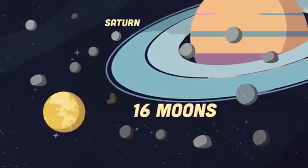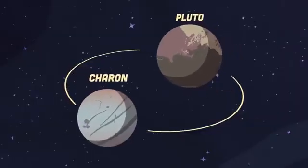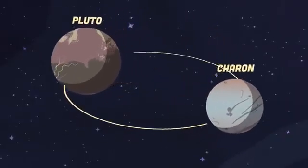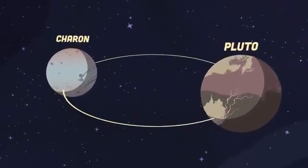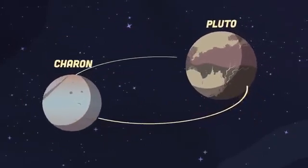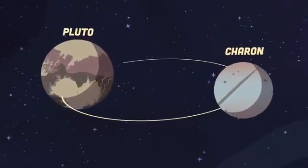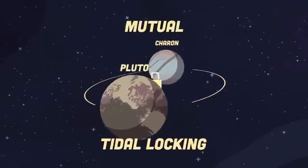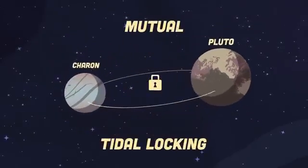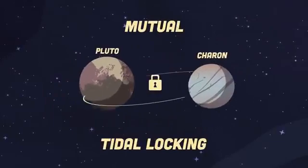Dwarf planet Pluto and its largest satellite Charon have the same surfaces facing each other as their orbit spins on. This phenomenon is called mutual tidal locking, the solar system's only known double planetary system.